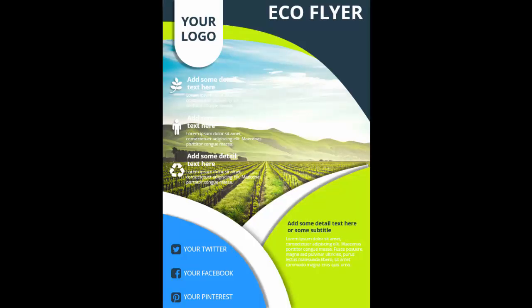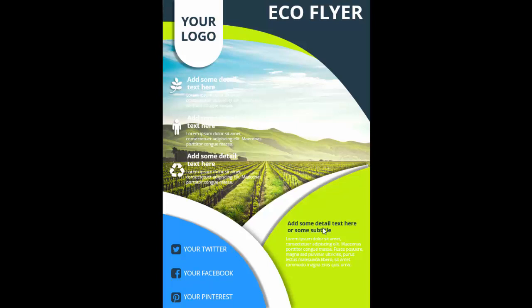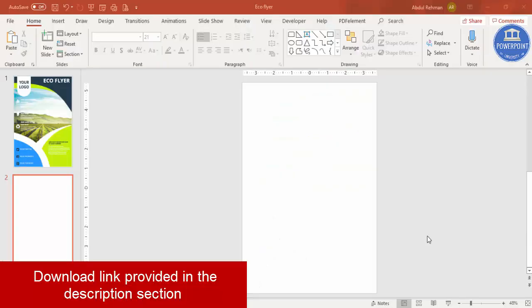In today's tutorial I'm going to show you how to make a professional eco flyer in PowerPoint. I have used very bright and attractive colors. You can put your logo here, the main flyer title here, and if you have some detail options along with icons you can add those. At the bottom you can add social media accounts, and on the right side you can add more details.